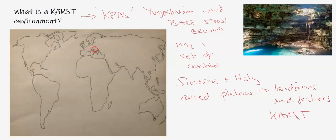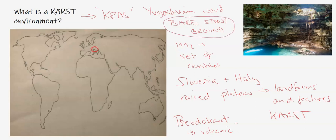The region in question is on the border of current-day Slovenia and Italy. It is a raised plateau, which is synonymous with these landforms and features that we now call karst. There are some areas classified as pseudokarst — maybe some volcanic regions which do have similar bare, stony ground. However, the bedrock is not the same; it would normally have a metamorphic or igneous bedrock, such as volcanic regions like Hawaii. So it's called pseudokarst.